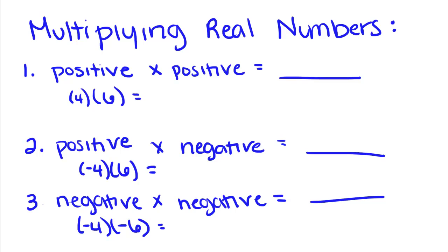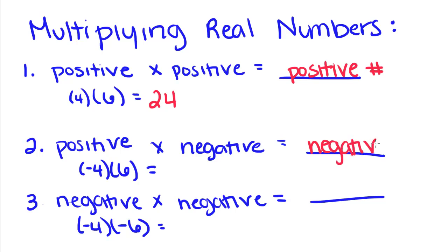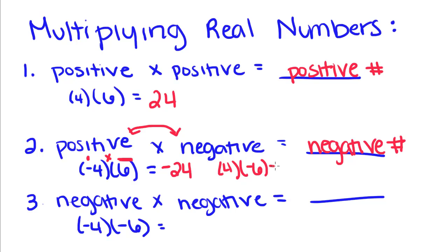When we have a positive number times another positive number, we're always going to get a positive number. So when we have 4 times 6, we're going to get positive 24. When you have a positive number times a negative number, you're always going to get a negative number, because if you take a negative number and multiply it a positive amount of times, you're still going to have a negative amount. So negative 4 times 6 gives you negative 24. This works if it's a negative times a positive — if 4 was positive and 6 was negative, it would still give you negative 24.